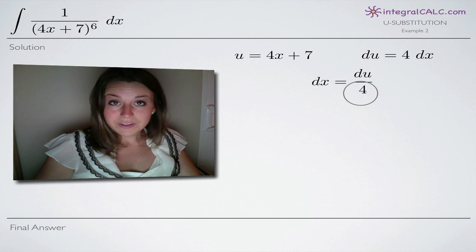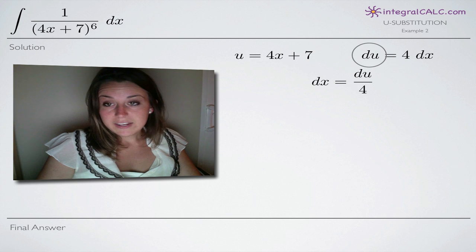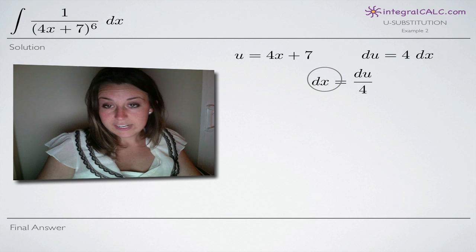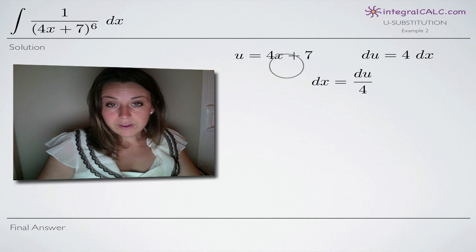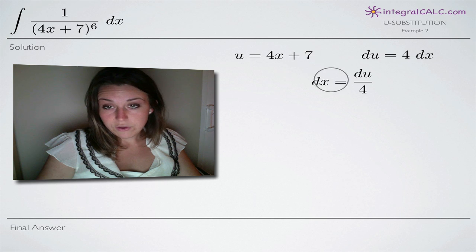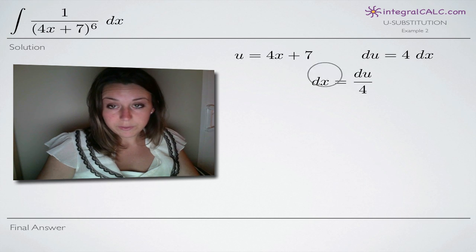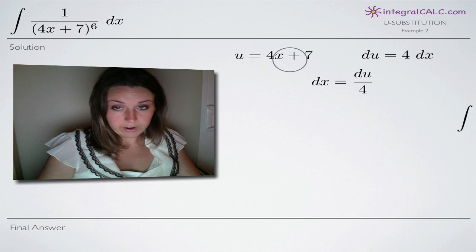Those are the first three steps in any u substitution problem. Finding u, taking du and then solving for dx. Now that we have something identified as u and we have dx, we can make these two substitutions back into our integral.